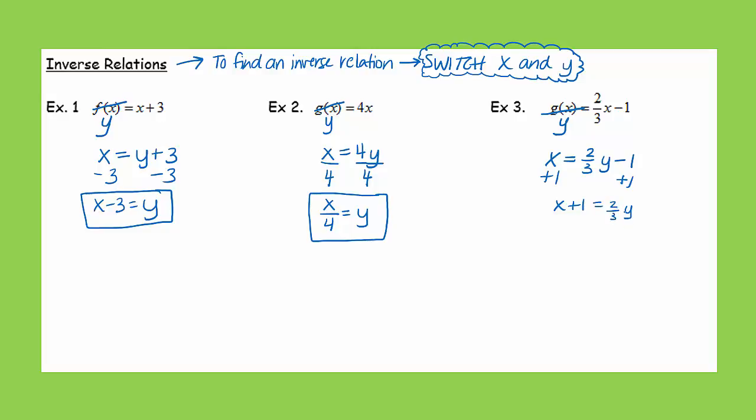And this 2 thirds is being multiplied with that y. So division undoes multiplication. This is one of those problems where I'm going to try to push your thinking a little bit. It actually helps you out a lot. Instead of dividing by 2 thirds, it's actually easier if we multiply by the reciprocal.